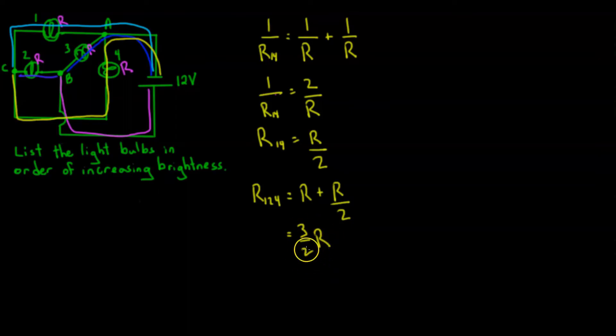So what does this mean? That means if we go to the left here at B, we have a resistance of 3 over 2 R. But if we go to the right, we only pass through one resistance, so the resistance is just R.